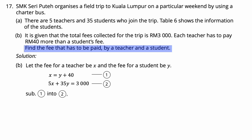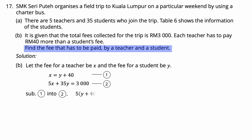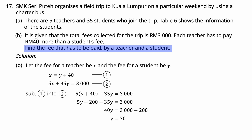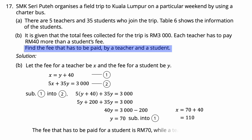Substituting Equation 1 into Equation 2: 5(y + 40) + 35y = 3,000. Expanding: 5y + 200 + 35y = 3,000. Transposing: 40y = 2,800, so y = 70. Substituting back: x = 70 + 40 = 110. Therefore, the fee for a student is RM70 and the fee for a teacher is RM110.